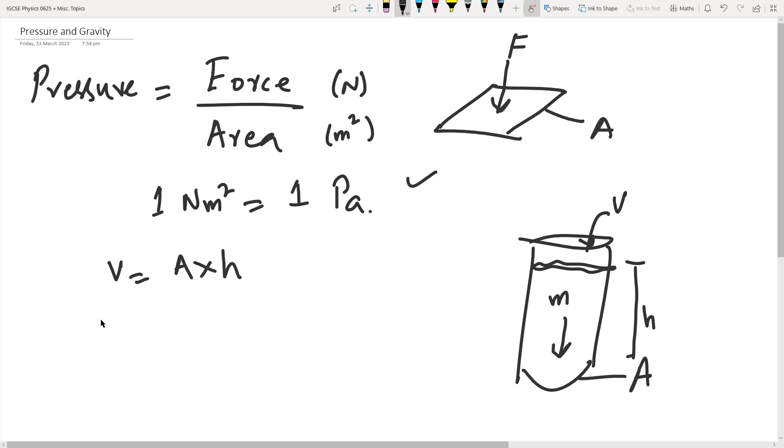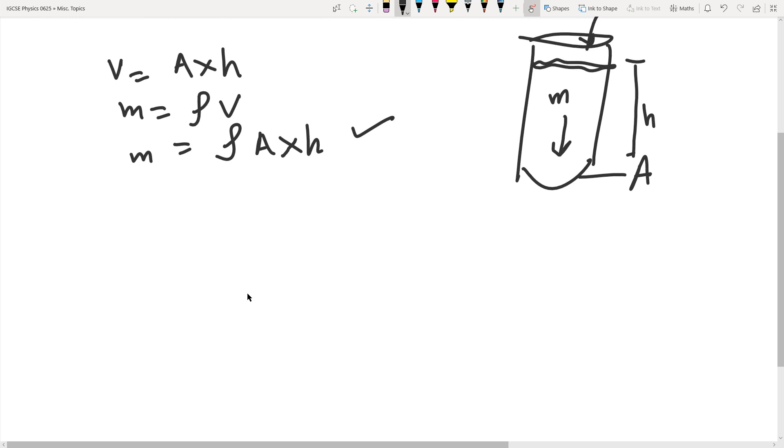When we consider mass, we know that mass is ρ times V. This V is also the volume of the water column, so we can consider this as A times h. So m equals ρ times A times h. This is how we translate the mass of this liquid. If you know the density, area, and height of the water column, we can translate the mass into these three quantities.